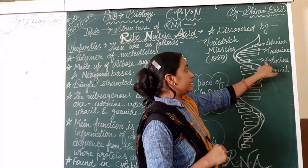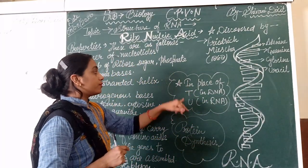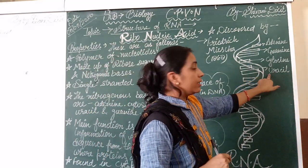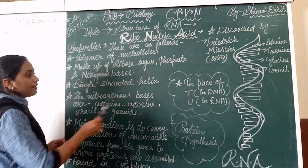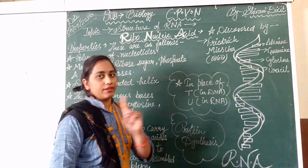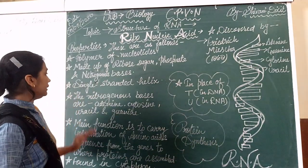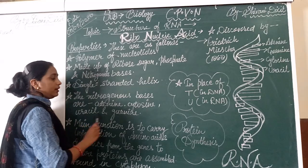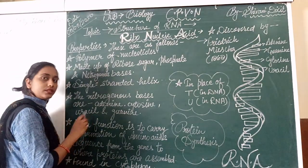Phosphate and nitrogenous bases are also present in DNA structure. But in RNA, in the place of thymine, uracil takes place. So wherever you see T in DNA, U (uracil) replaces it in RNA. The nitrogenous bases in RNA are adenine, cytosine, uracil, and guanine.